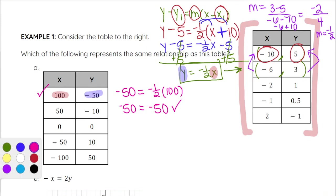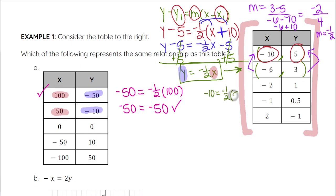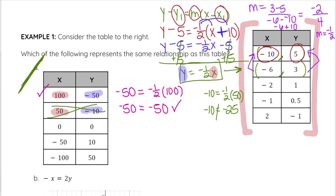Plugging in the next point — x equals 50, y equals negative 10 — we get negative 10 equals negative 1 half times 50, which equals negative 25. That is not a true statement. That point does not work, which means A is not a representation of the original table.